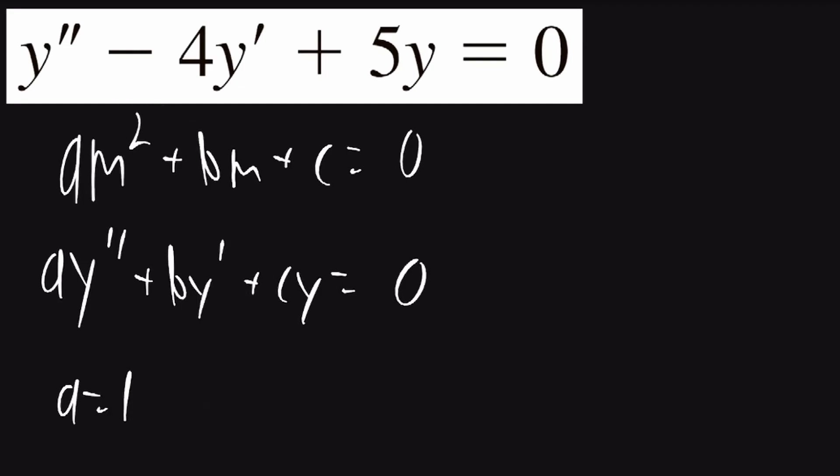The coefficient of y prime is negative 4, so b is going to be equal to negative 4. And the coefficient of y is 5, so c is going to be equal to 5. We can write the auxiliary equation. It'll be m squared minus 4m plus 5 is equal to 0.